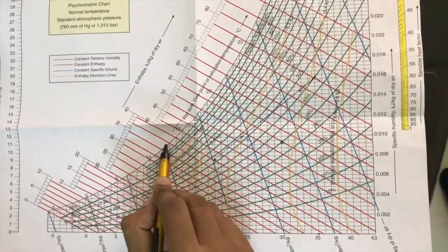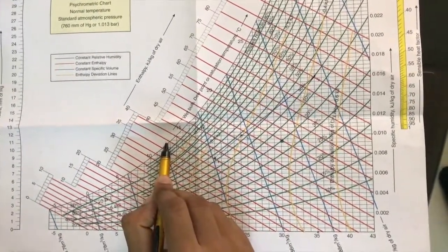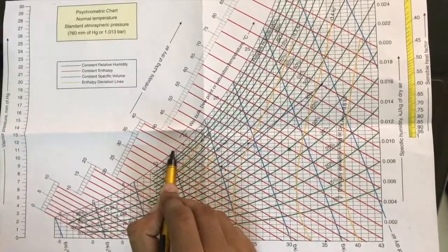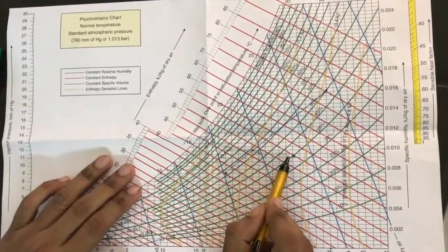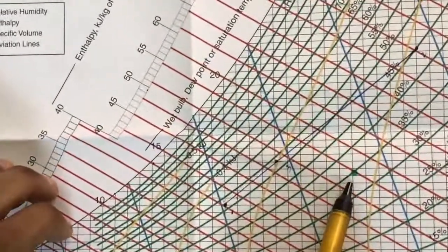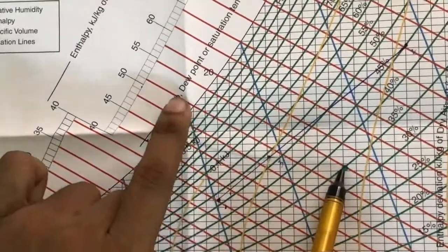Now if we are to get the wet bulb temperature, draw a line which is parallel to this enthalpy line. So here the point itself is on the inclined line, so the line will be this one.